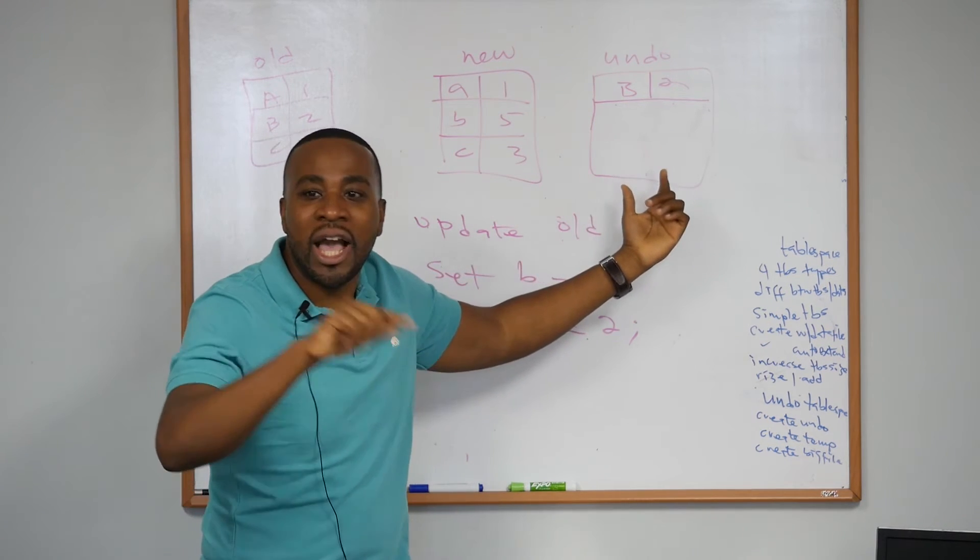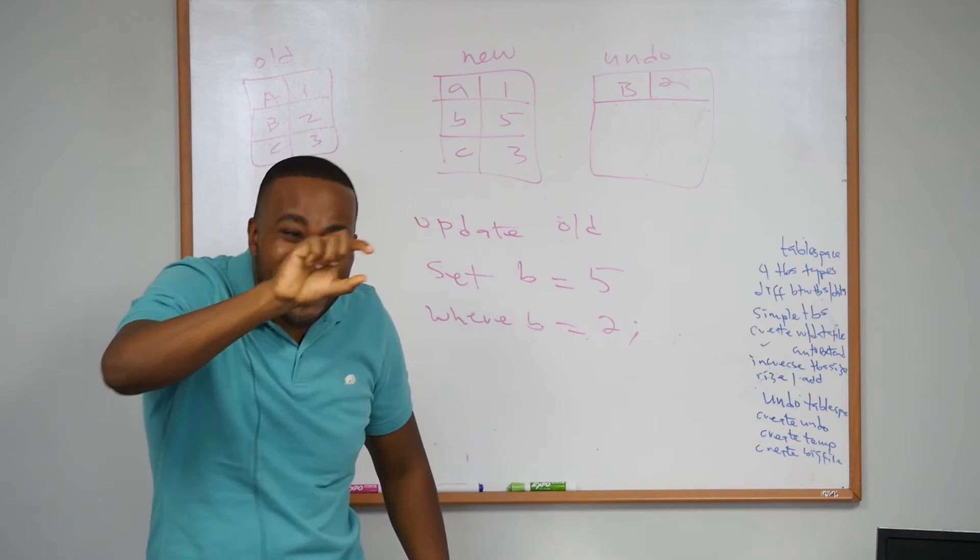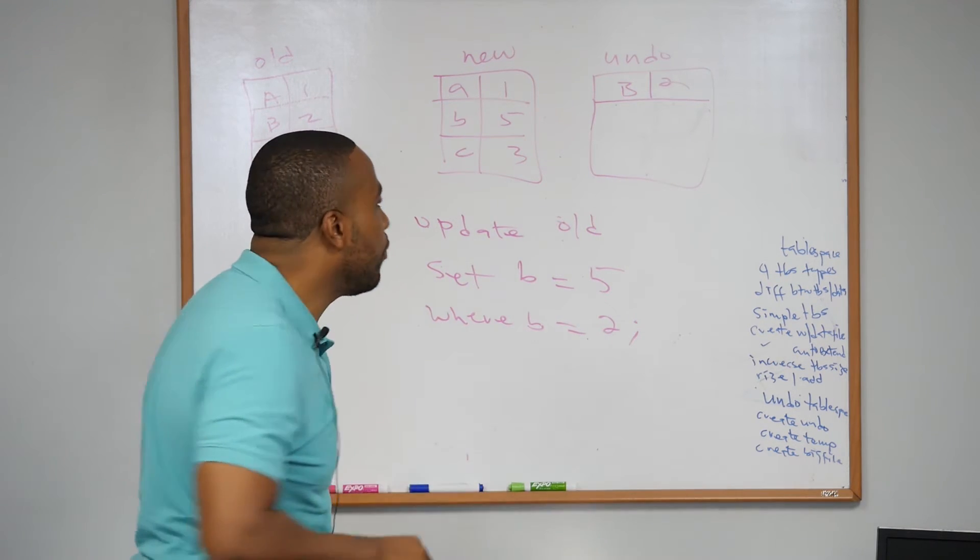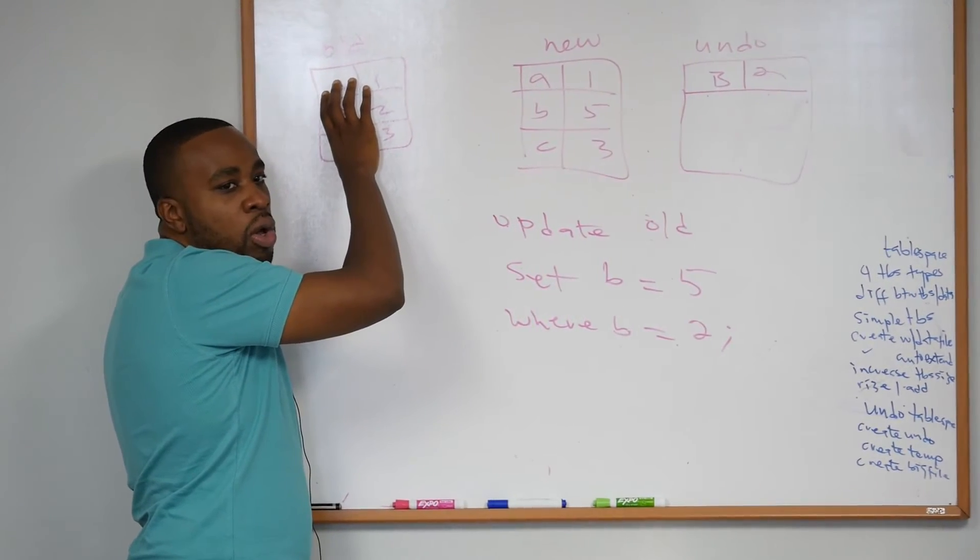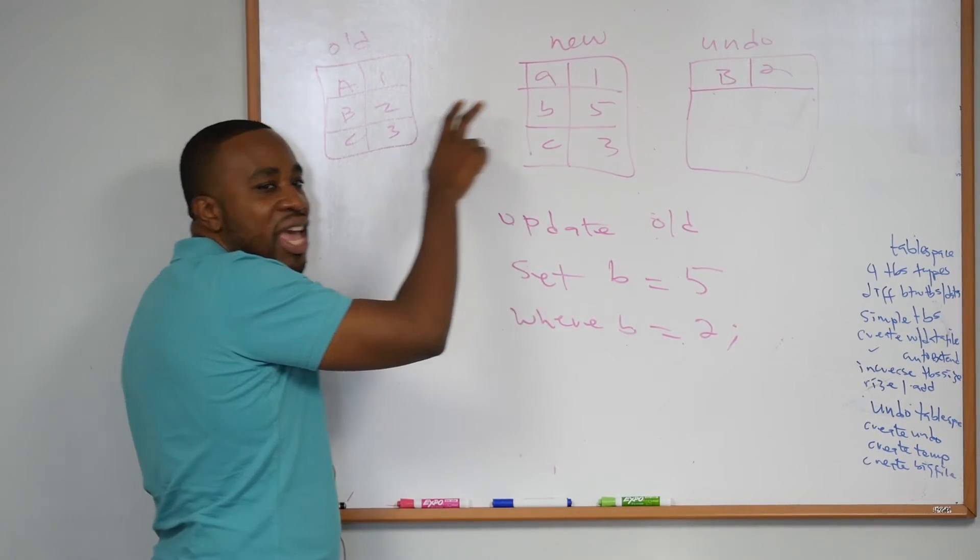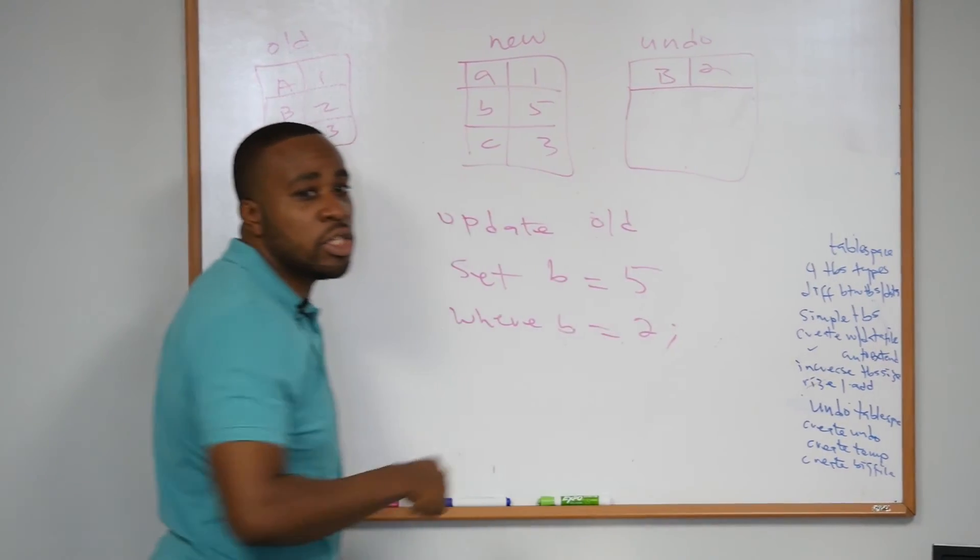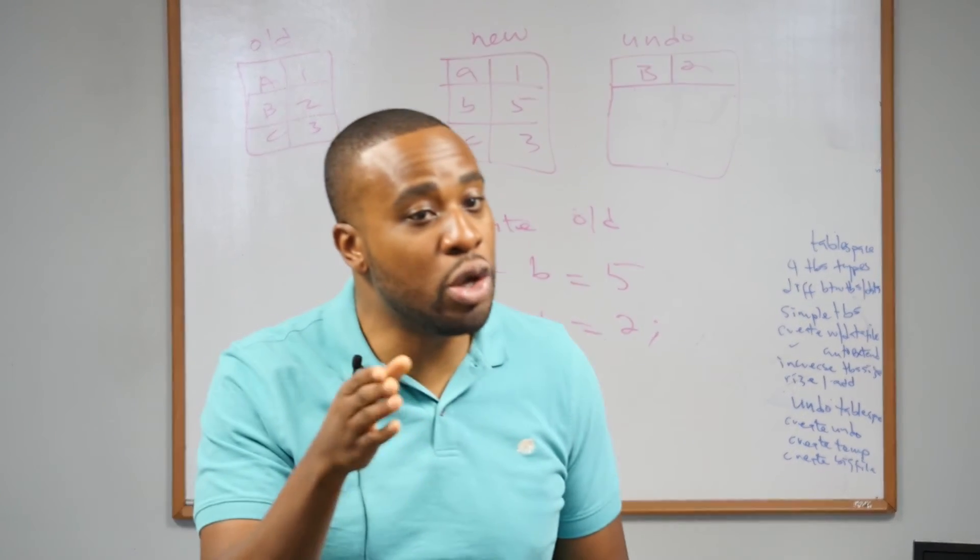image—the before image—which is B2. Not this whole entire table, no, just B2. It has to keep that in the undo tablespace so that in case you need to do a rollback, you can always roll it back because you have not committed. But here's the deal: the moment you